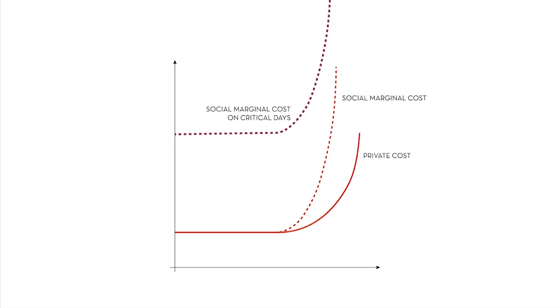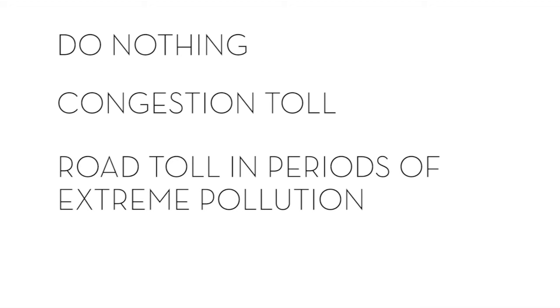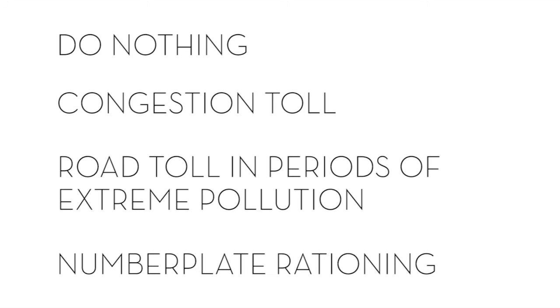Well, how to deal with this poisonous smog? We could do nothing. That, in fact, is today's solution in Bergen. We could introduce a congestion toll, which has been proposed by the city council. Or we can add an extra road toll in periods of extreme pollution. And, which has also been proposed by the city council, we could limit traffic by number plate rationing on extreme days. If the last digit of your number is an even number, you can drive only on even dates, and vice versa for odd last digit numbers.